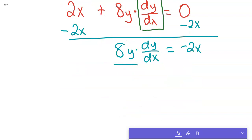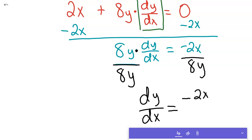8y times dy dx equals negative 2x. Okay, and then you just divide. I'll just get a different color going. Then you can just go ahead and divide by 8y on both sides, because this is multiplication here. And do a little simplification. And dy dx,